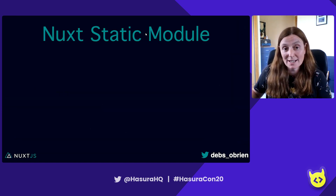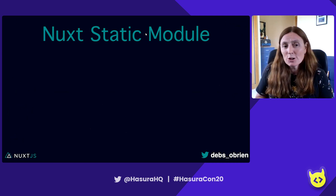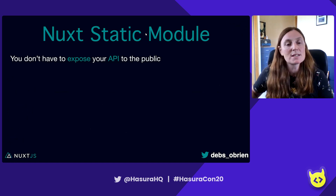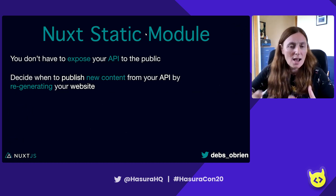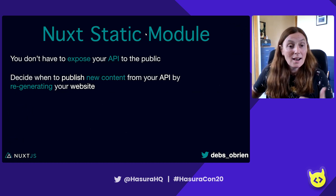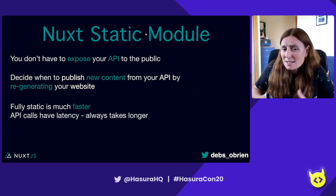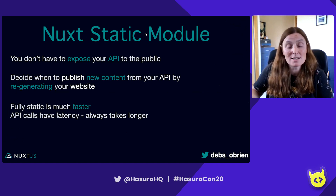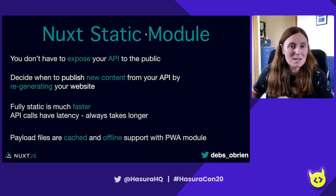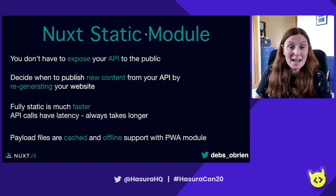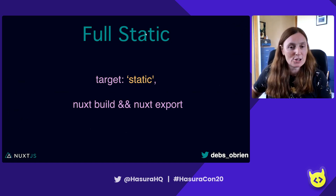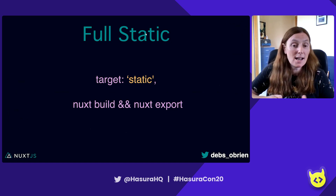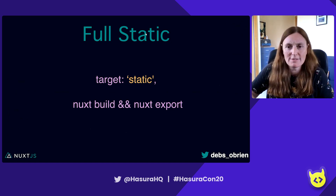The Nuxt static module is about to be released. Basically, you don't have to expose your API to the public anymore - in your network tab you won't see your API call. You can also decide when to publish new content by regenerating your website. Fully static is much faster because API calls have latency, and the payload files are cached, which means offline support is impressive, especially with a PWA module. To get full static, you set target static and use the commands nuxt build and nuxt export. This is the new way of doing what was previously mode universal and nuxt generate.